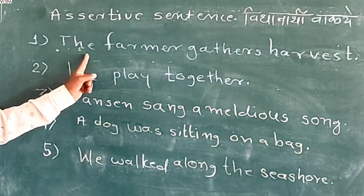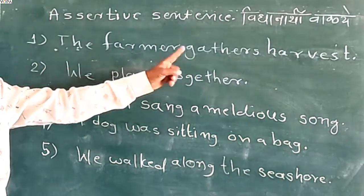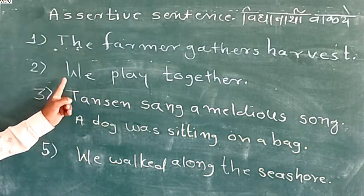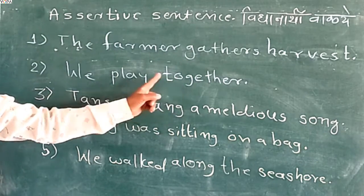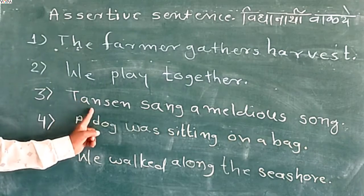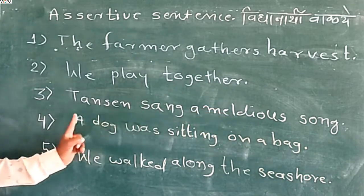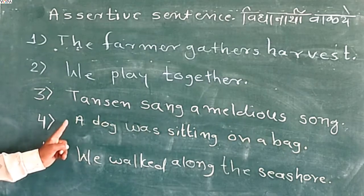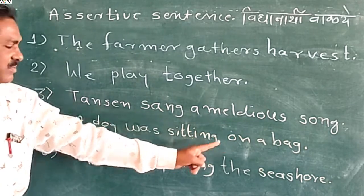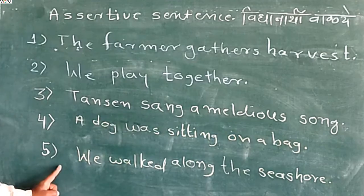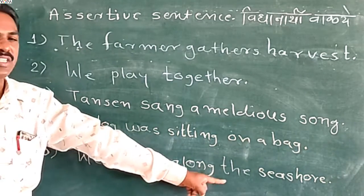Here are some examples: The farmers gather somewhere. Second example — we play together. Third example — dancing and a melodious song. Next example — a dog was living on a bed. And the last one is — we walk along the sea.